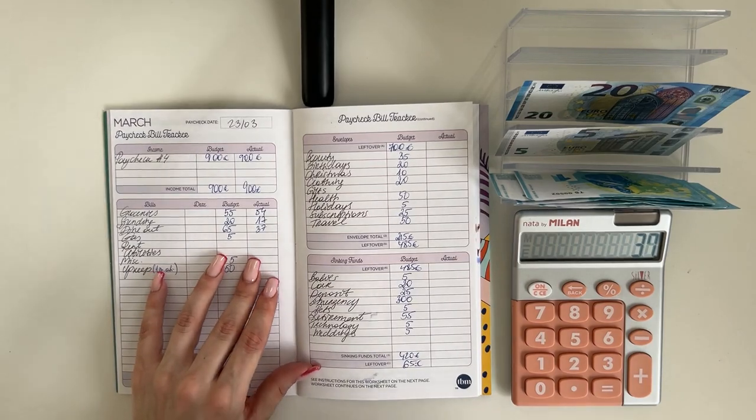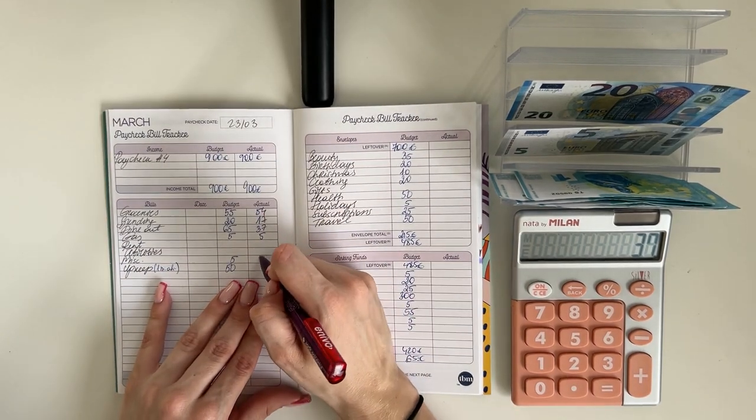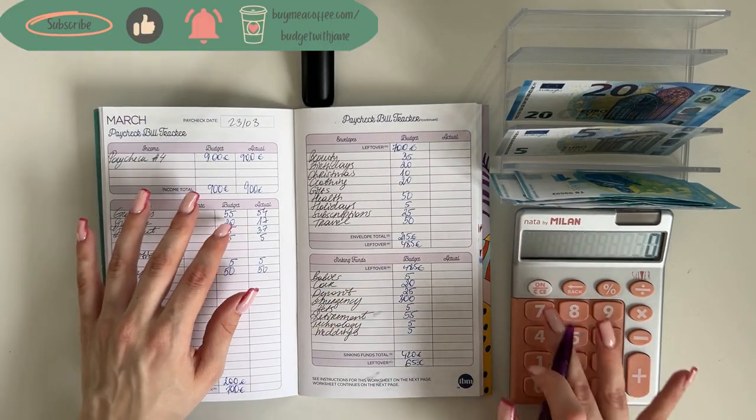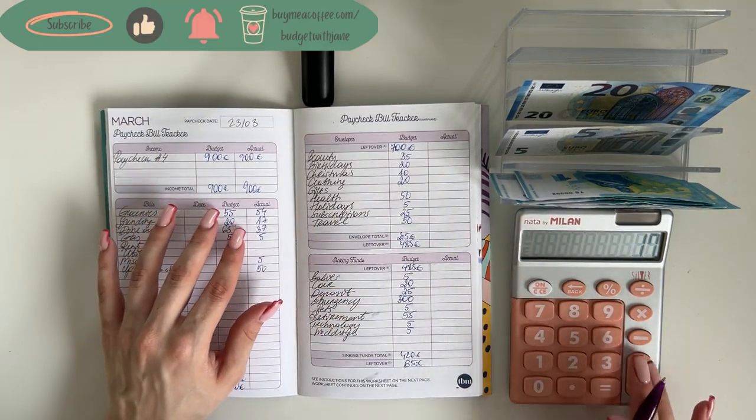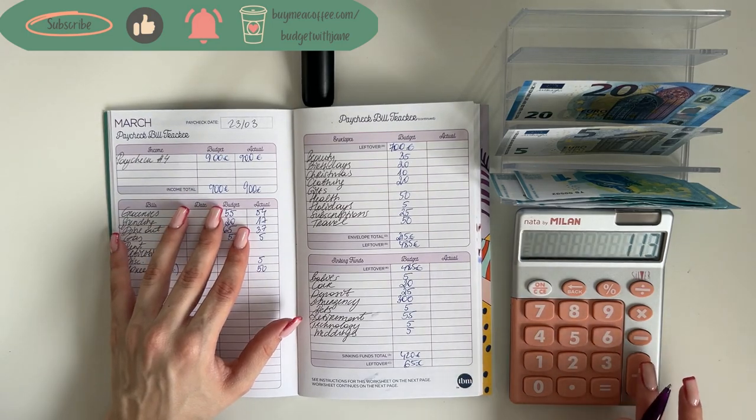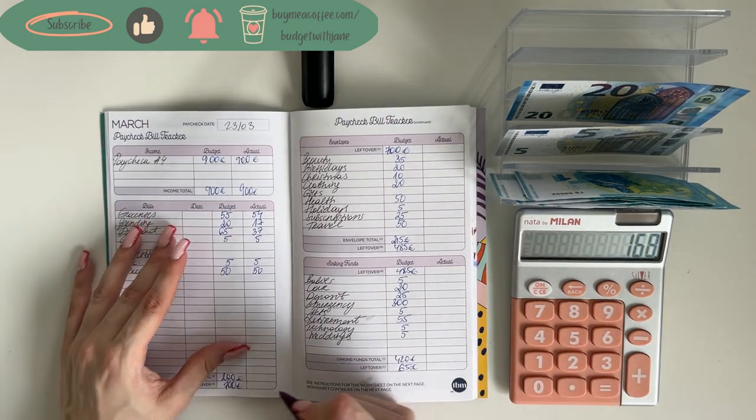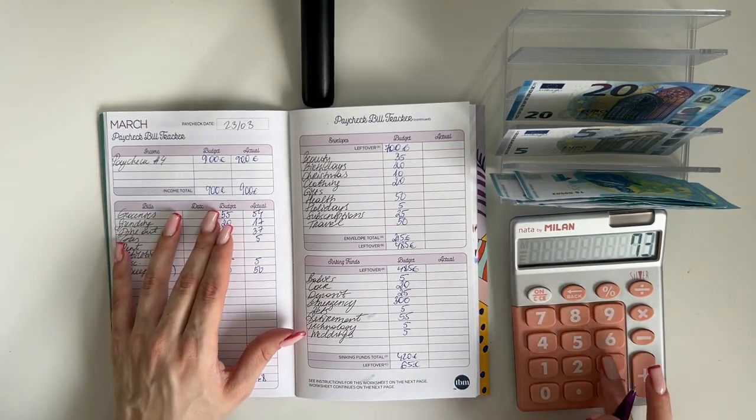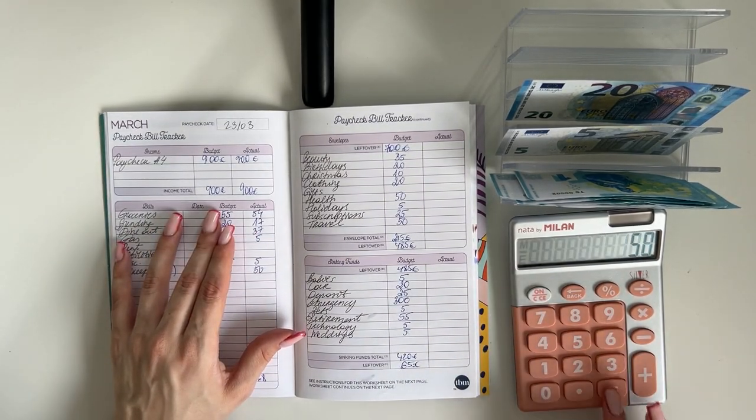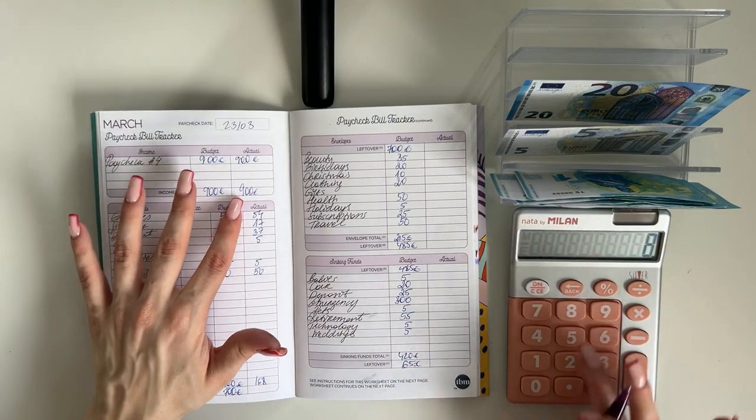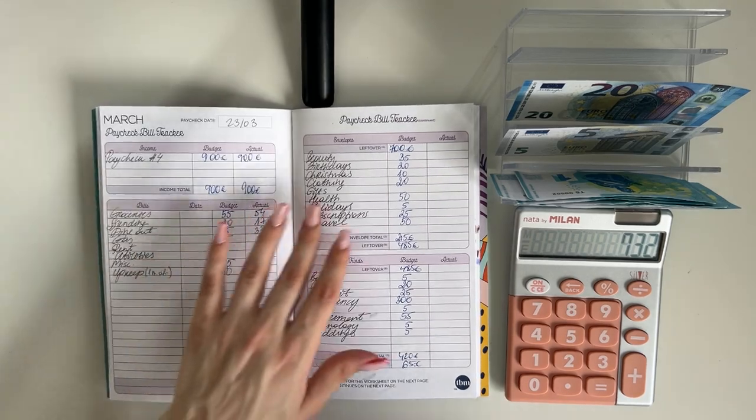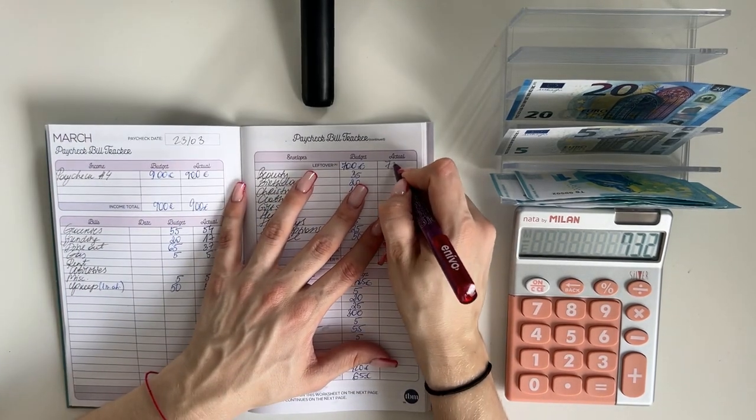Okay, so gas did get five, miscellaneous got five, and upkeep, aka one month ahead, got 50. So in total, bills and cash envelopes got 168. Is that correct? Let me check. 168, okay. So 900 minus 168, 732 euros left to work with.